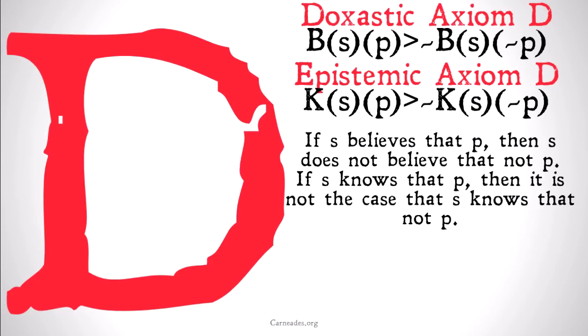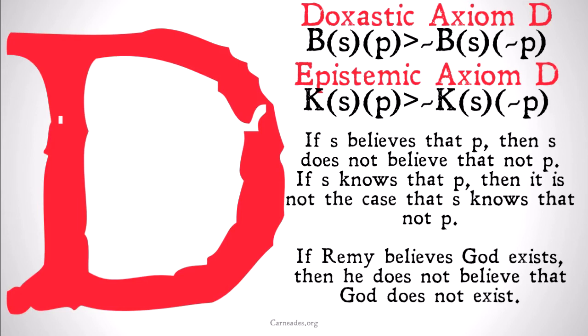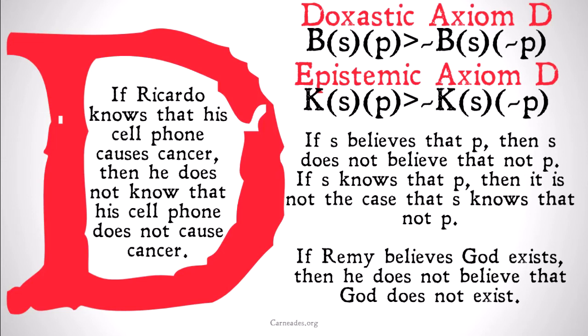Basically, if S believes that P, then S does not believe that not P. If S knows that P, then it's not the case that S knows that not P. For example, if Remy believes God exists, then he does not believe that God does not exist. If Ricardo knows that his cell phone causes cancer, then he does not know that his cell phone does not cause cancer.